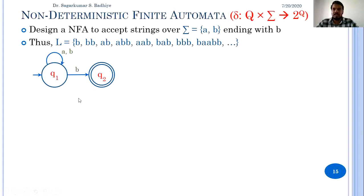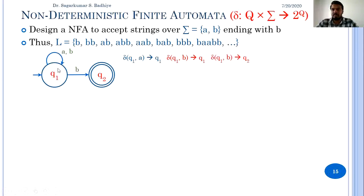This is called an NFA because there are multiple transitions from state q1 on input B. If any state-symbol input combination produces multiple output states, it is an NFA. When q1 gets A as input, the transition is to q1 only — this is fixed. But in q1, if B is the input, the transition can be either to q1 or to q2. This non-determinism makes it a non-deterministic finite automata. In q2, if I get A there is no transition, so I go to phi. In q2, if I get B there is again no transition, so I go to phi.